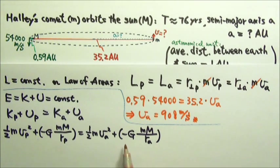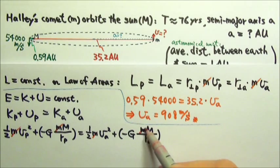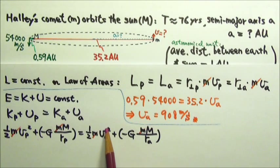Every single term has the little m, the mass of the comet, so we can cancel the little m. As you can see, to solve for v sub a using energy conservation,